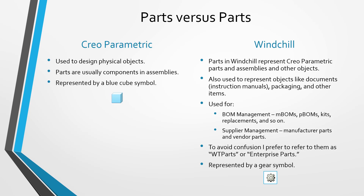When you check an assembly from Creo Parametric into Windchill, that's going to create what's known as the E-BOM, or engineering bill of materials, as the designers created it. But typically, the way that the product is going to be manufactured is going to be different than the way the engineers put it together inside of Creo Parametric, so they need to rearrange the bill of materials. It's called E-BOM to M-BOM transformation, and these Windchill parts can be used for performing that.